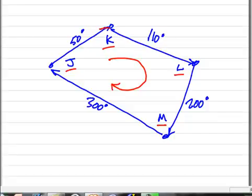You can see we're going from J to K with an azimuth of 50, from K to L with an azimuth of 110, from L to M with an azimuth of 200, and from M to J with an azimuth of 300.